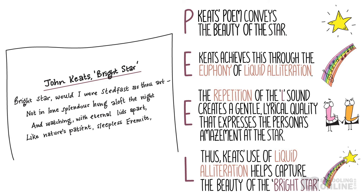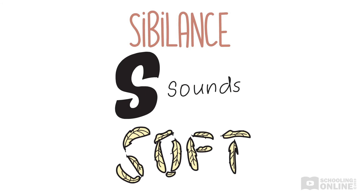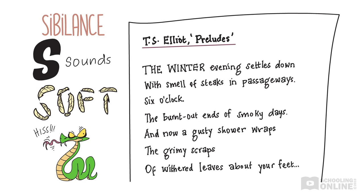Another specific type of alliteration is sibilance, which refers to the repetition of S sounds. While sibilance can be soft and gentle, it can also create a harsh, hissing quality, making it cacophonic. Check out this example from T.S. Eliot's poem Preludes: 'The winter evening settles down with smell of steaks in passageways. Six o'clock, the burnt-out ends of smoky days.'